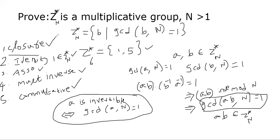So we proved all the properties. Therefore, Z*n is a multiplicative group. You will encounter this group many times in cryptography, especially during RSA in particular. RSA also works in regular Zn from 0 through n minus 1, but most of the elements of the group actually are here in Z*n.